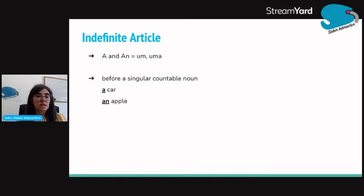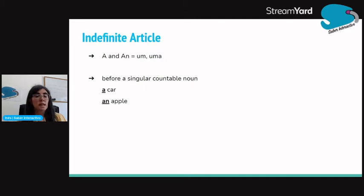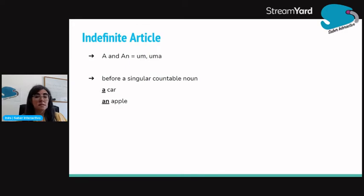We use the indefinite article before a singular countable noun. For example: a car, an apple. We use a or an before a singular countable noun — a noun that has singular and plural, but that is in singular. So: a car, an apple.